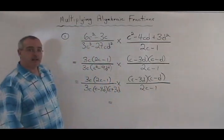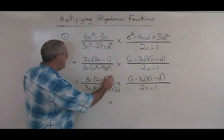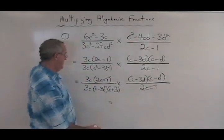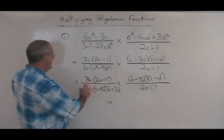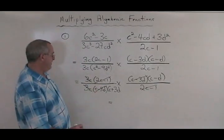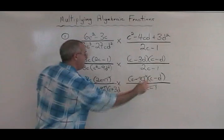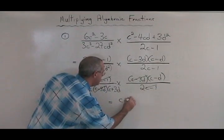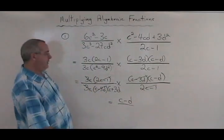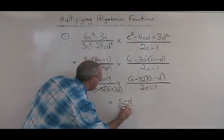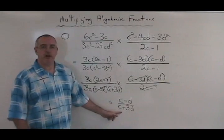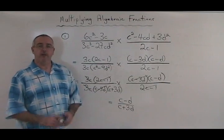And now we can start canceling. The 2c minus 1 here will cancel with this one. The c minus 3d here will cancel with this one. The 3c and the 3c cancel. All we're left with on the top is c minus d. And all we're left with on the bottom is this c plus 3d. This expression cannot be further simplified, so we're finished.